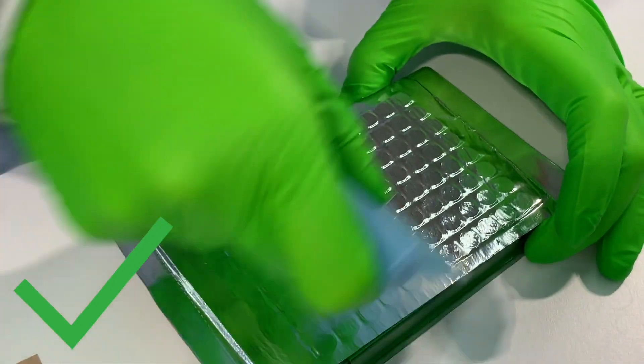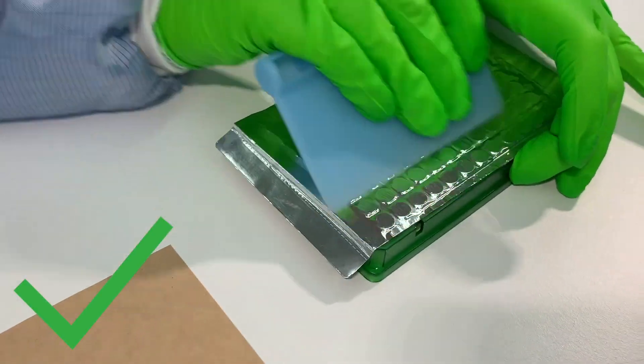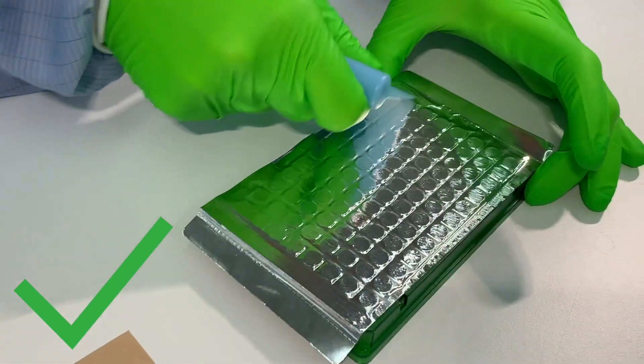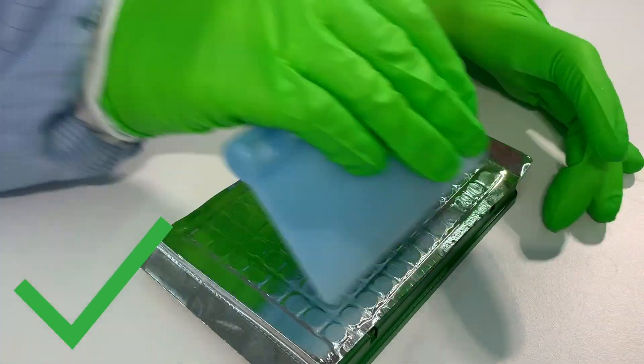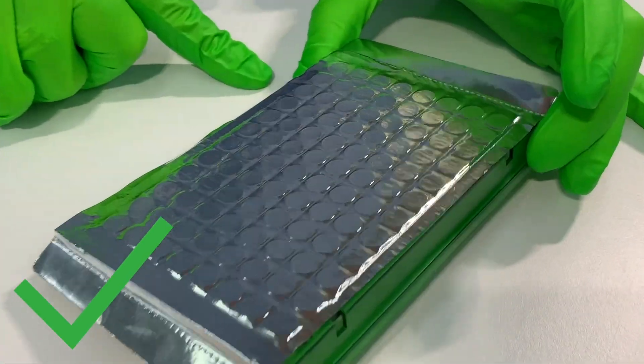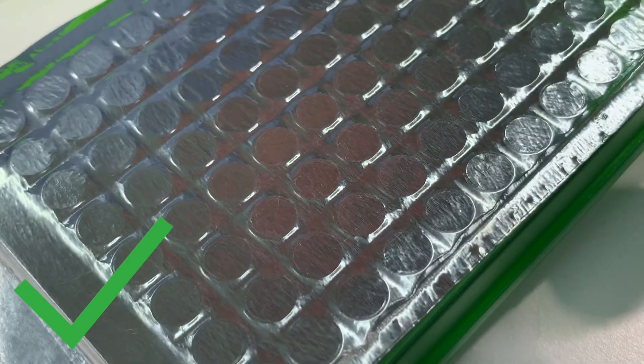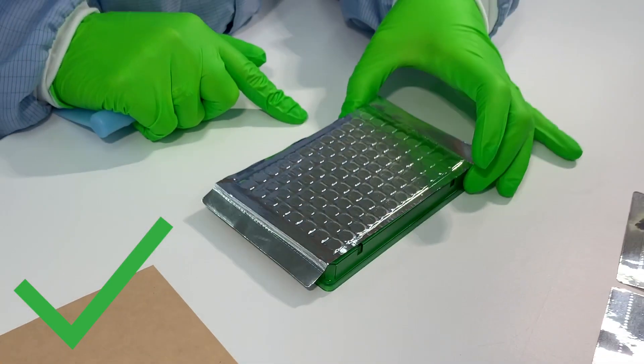Then ensure that the edge rows and columns are sealed properly by pulling the sealer over those rows specifically. You should see clear round marks for every individual well. If you're unsure of the sealing, pull the sealer again over the plate.